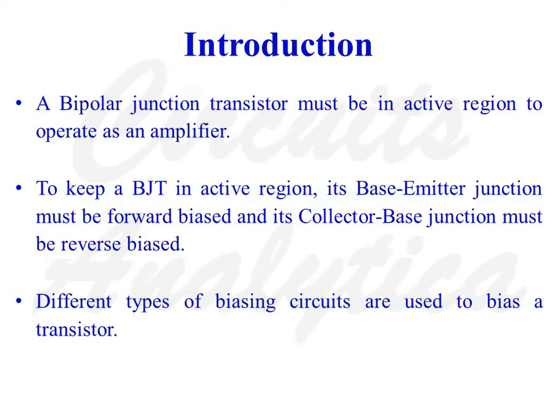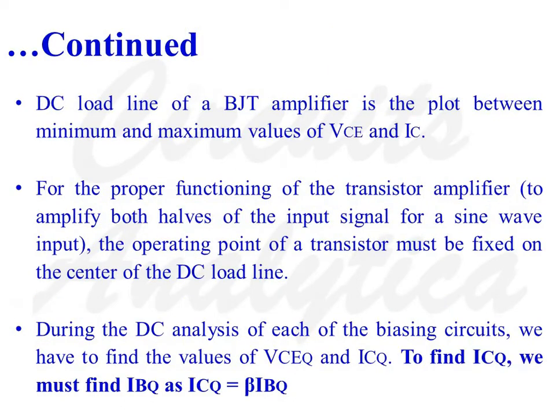Different types of biasing circuits are used to bias a transistor. The DC load line of a bipolar junction transistor is the plot between minimum and maximum values of VCE and IC. For the proper functioning of the transistor amplifier, the operating point must be fixed at the centre of the DC load line and the operating point must be stable. During the DC analysis of each biasing circuit, we have to find the values of VCEQ and ICQ.